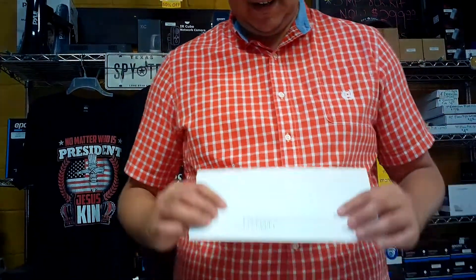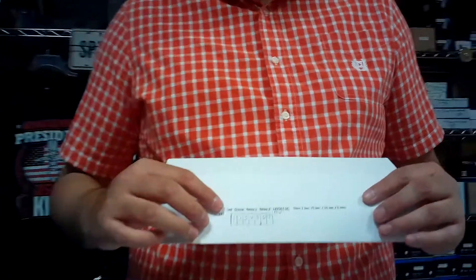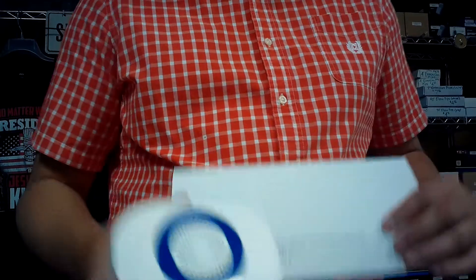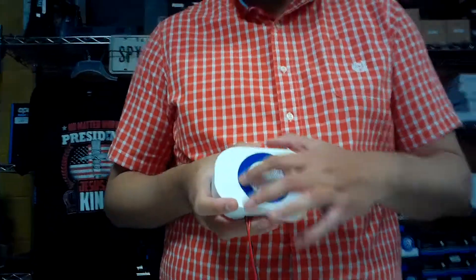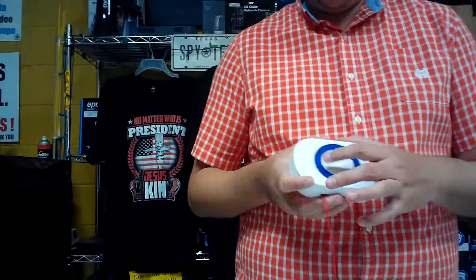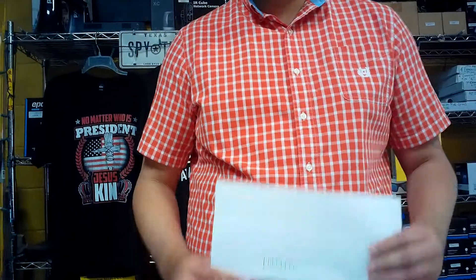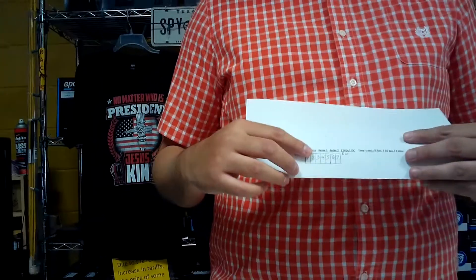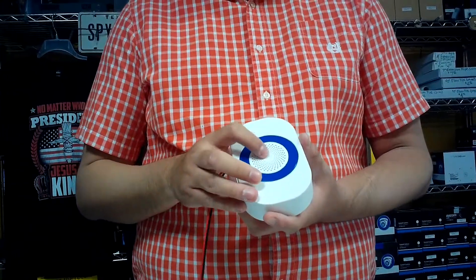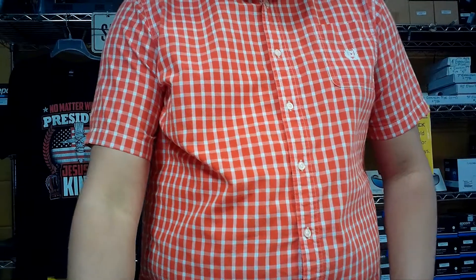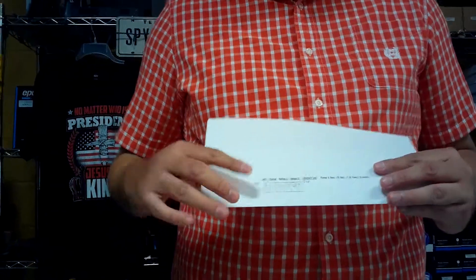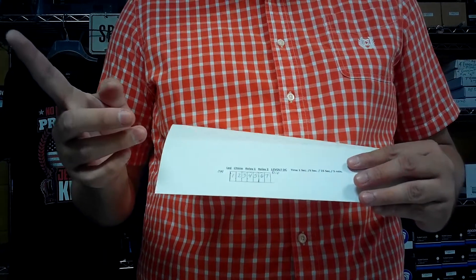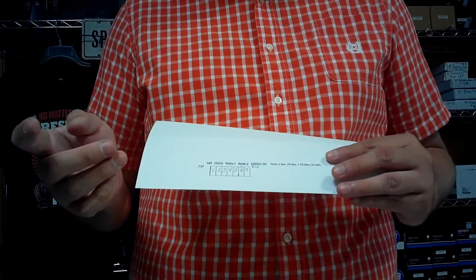Now we created a little diagram right here on what those dip switches are. The first one is going to be for your LED. So if you want the LED lights right here to light up when the sensor goes off, then you would either turn those on or off. The second one is going to be for your chime. That chime is going to be the one coming from here, from the same base station. And then the three and four, those are going to be for your relay number one and relay number two.